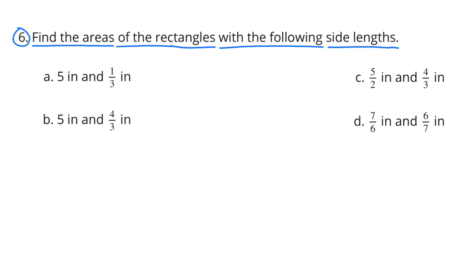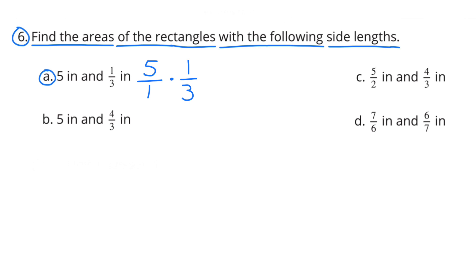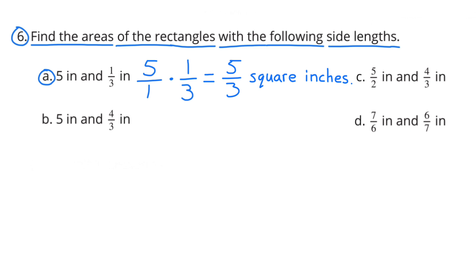Number 6. Find the areas of the rectangles with the following side lengths. A: 5 inches and 1/3 inches. 5/1 times 1/3 equals 5/3 square inches.